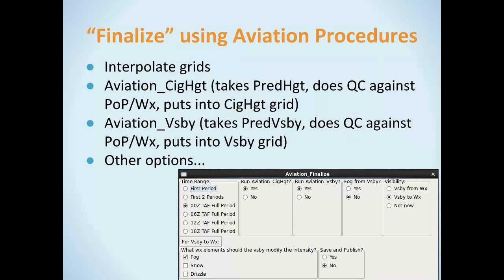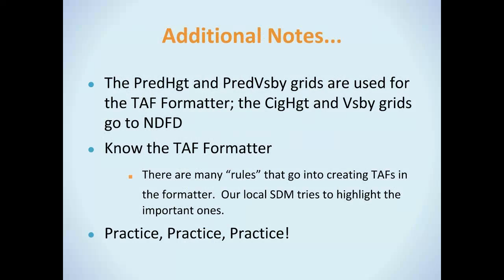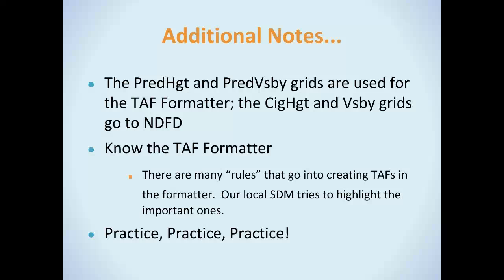Aviation Finalize interpolates the grid. It makes your predominant height — which you're editing — into your ceiling height. It takes your predominant visibility and puts it into your visibility. This applies a few quality control tools. Your TAF formatter uses your predominant height and predominant visibility grids. The NDFD gets your ceiling height and visibility finalized grids. Then it is just a matter of practice for becoming more familiar with aviation grids and using them on a daily basis.